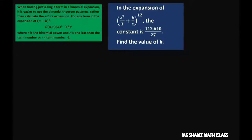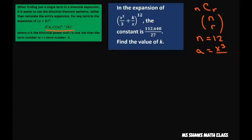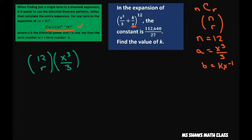We're going to use this formula here, using n choose r. Let's rewrite this: our n is 12, our a is x cubed over 3 (one third of x cubed), and our b is kx to the negative 1 — I just rewrote that by putting the x up in the numerator. So we have n choose r, with a equal to x cubed divided by 3 to the 12 minus r, and b equal to kx to the negative 1 to the r power.